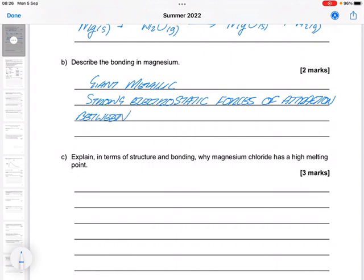The moment you mention the word attraction, you've got to state what it is between. Okay, so this is between the positive magnesium ions and the negative delocalized electrons. So the marks for that is attraction between magnesium ions for one mark, and the second mark is for the delocalized electrons.